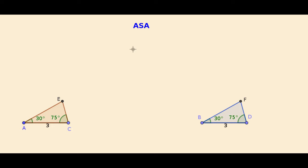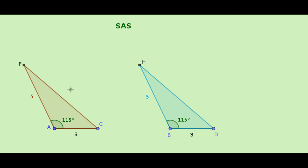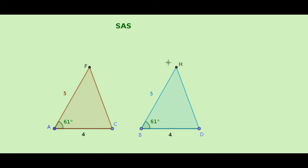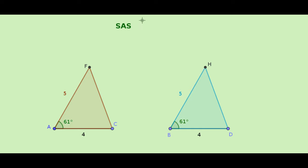Next, let us consider one more postulate of congruency of triangles. If you observe these two triangles, the two sides and the included angle of one triangle are equal to the corresponding two sides and included angle of another triangle, then those two triangles are congruent. Even when I change the side or the angle, the two sides and included angle remain equal, and those two triangles are congruent. This postulate of congruency is known as the SAS postulate.